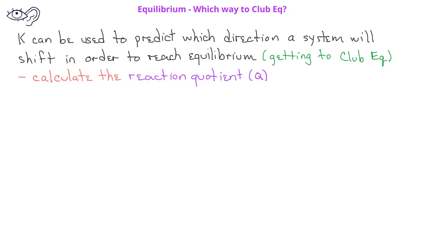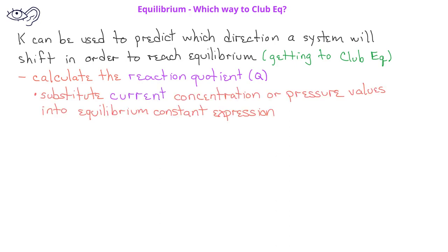We'll do this by calculating what's called the reaction quotient, which is symbolized with a capital letter Q. The reaction quotient is determined by substituting the concentration or pressure values at a specific point in a reaction into the equilibrium constant expression.